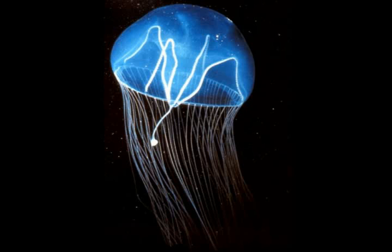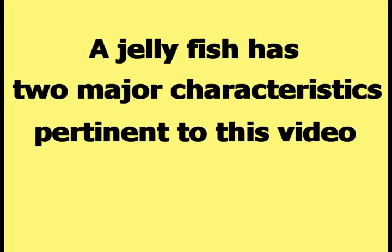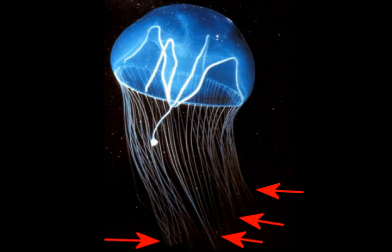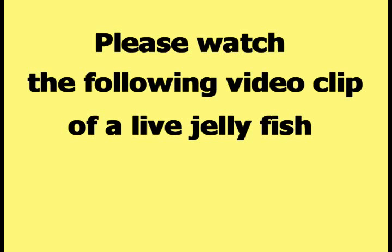Here is a picture of an example jellyfish. A jellyfish has two major characteristics pertinent to this video. There is a large mass at the top of the jellyfish that is usually hemispherical in shape. Underneath the hemispherical shape are tendrils or tentacles that hang down to various lengths. Please watch the following video clip of a live jellyfish to get a feel for how a jellyfish moves and how the body of a jellyfish reacts to movement.